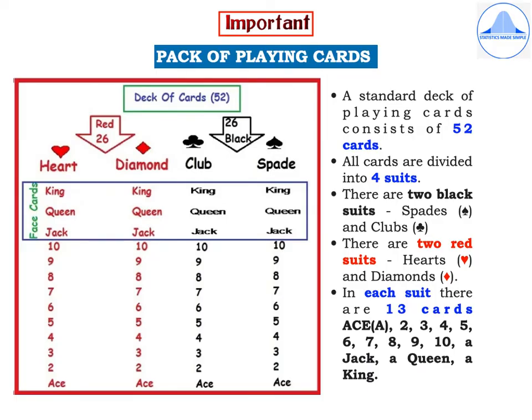Let me now explain what is a pack of playing cards, which is also called as a deck of cards. A standard deck of playing cards consists of 52 cards and all the cards are divided into 4 suits. There are 2 black suits: spades and clubs. There are 2 red suits: hearts and diamonds. And in each suit there are 13 cards.